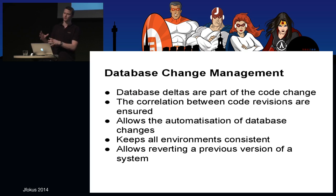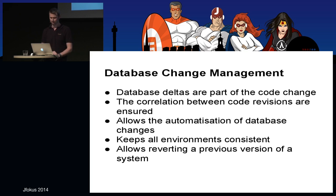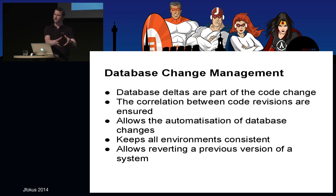You keep your database deltas in your source control repository right beside your normal code. This ensures a correlation between code and database revisions — at any given point in time you can see that this code matches that database structure. It allows you to automate the process of applying database changes, keeping all your environments in a consistent state. It also gives you the ability to revert a production deployment and roll back the database changes as well. There's even a commercial tool called JRebel Live that uses Liquibase under the hood to achieve this.